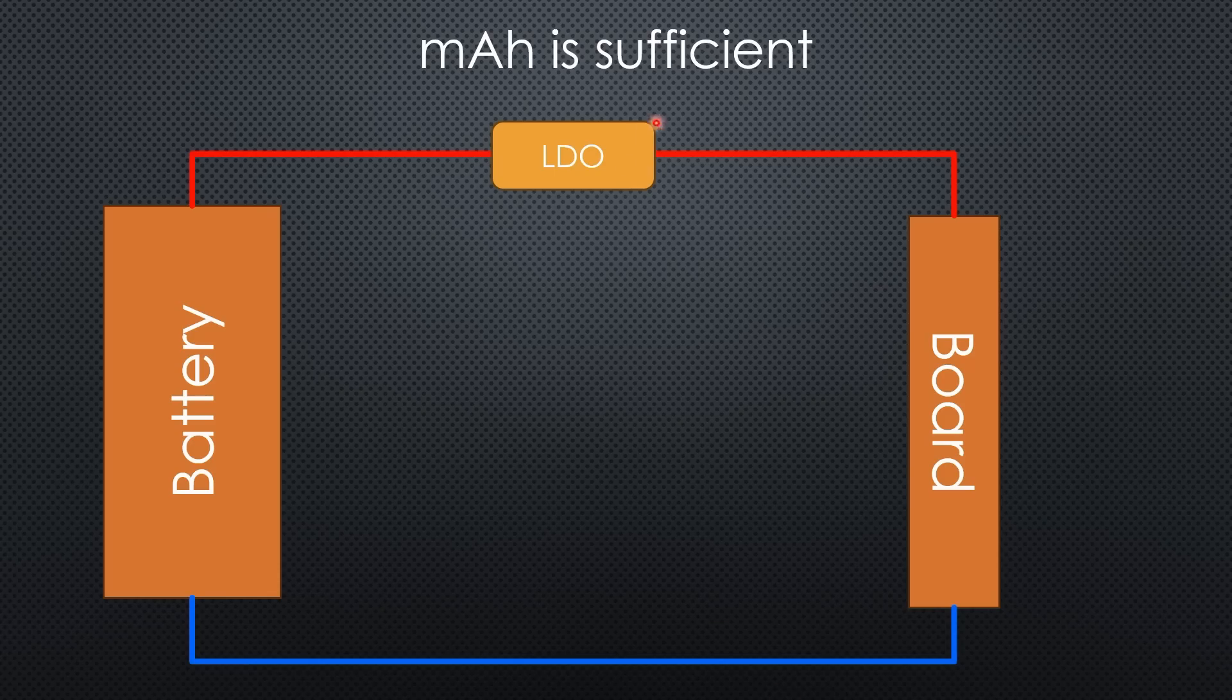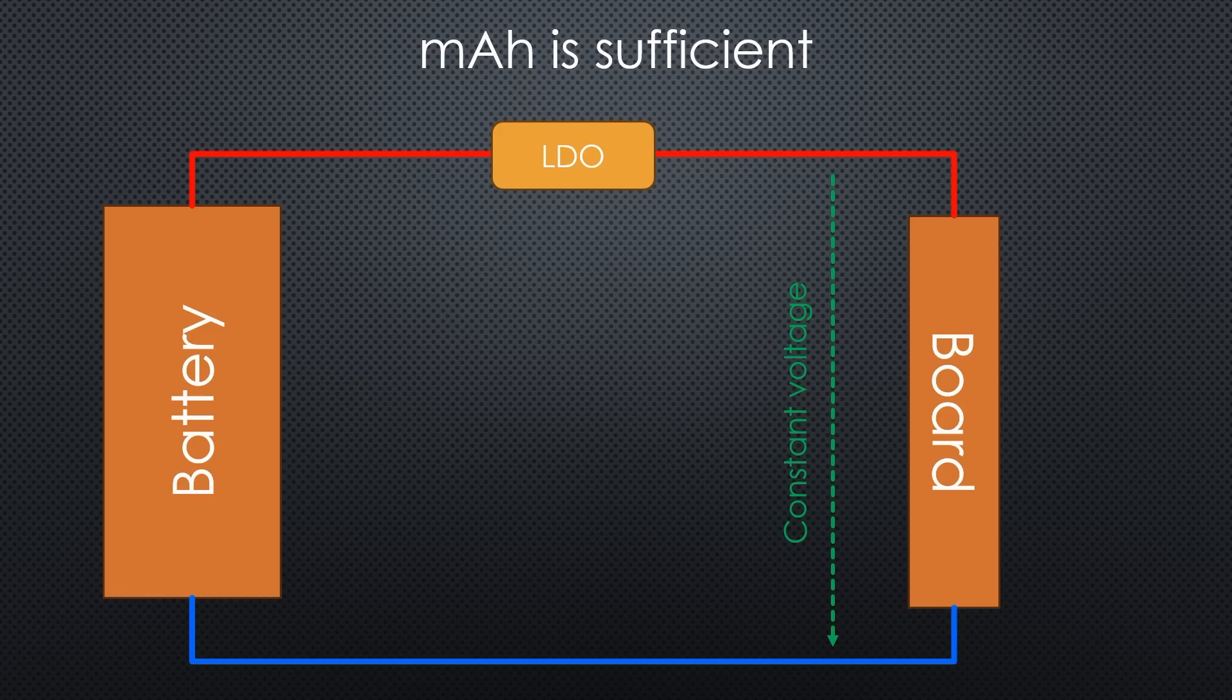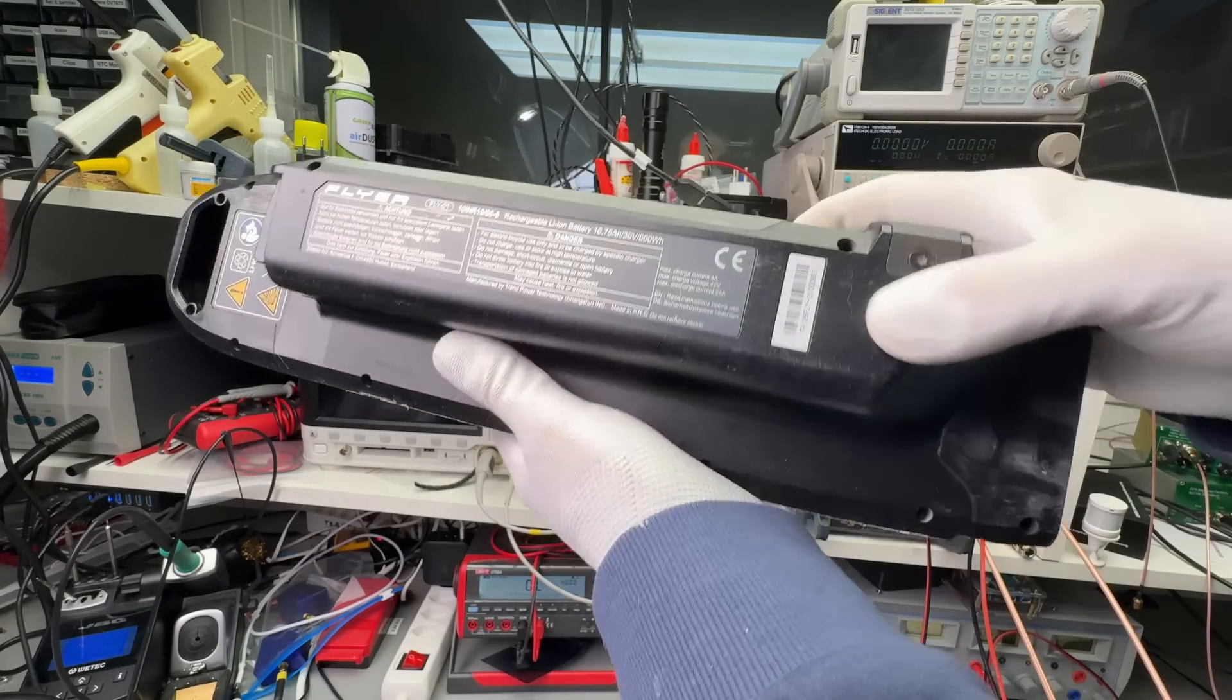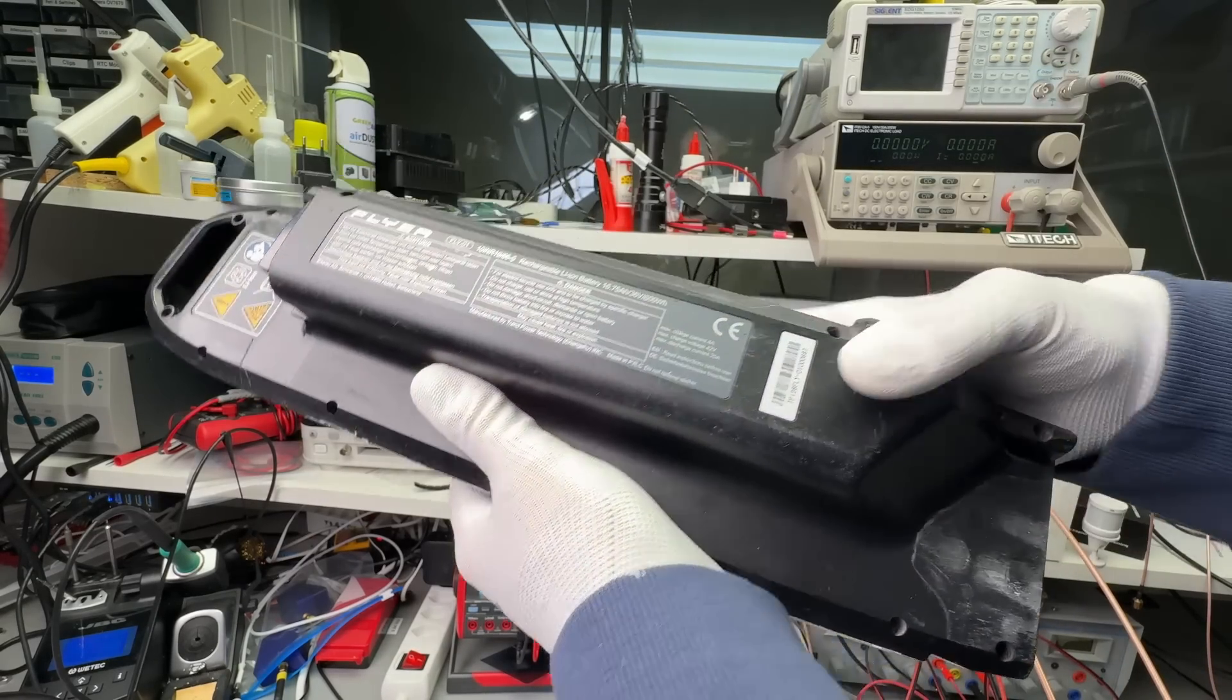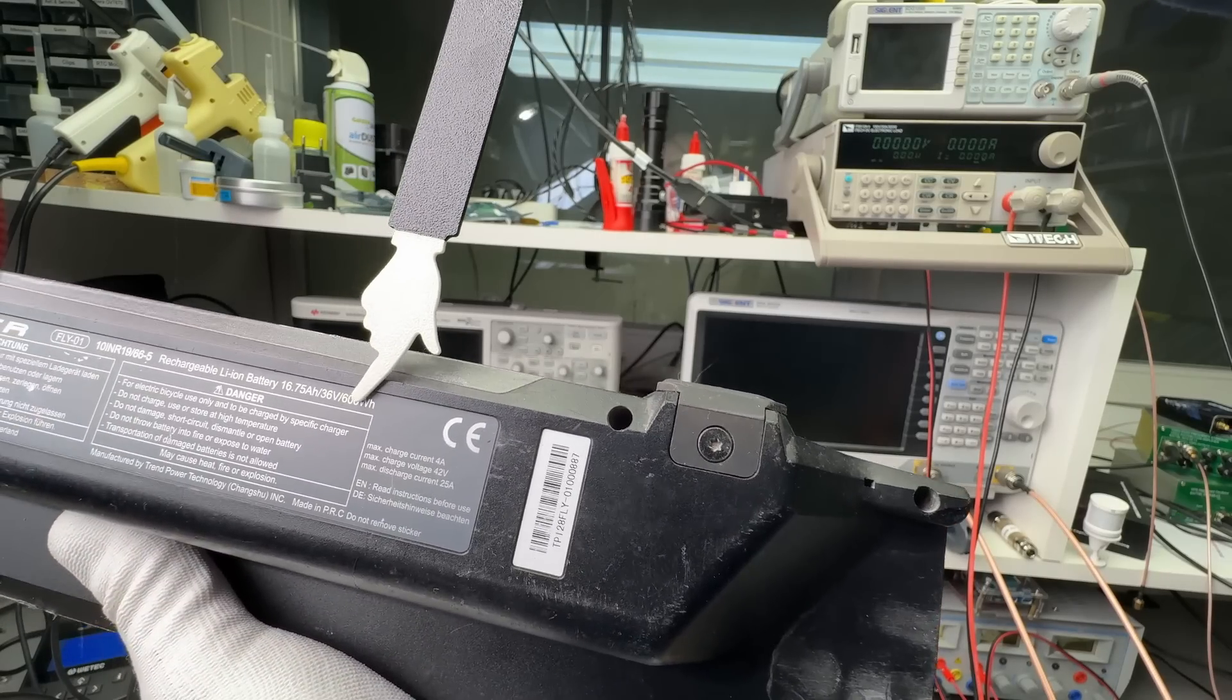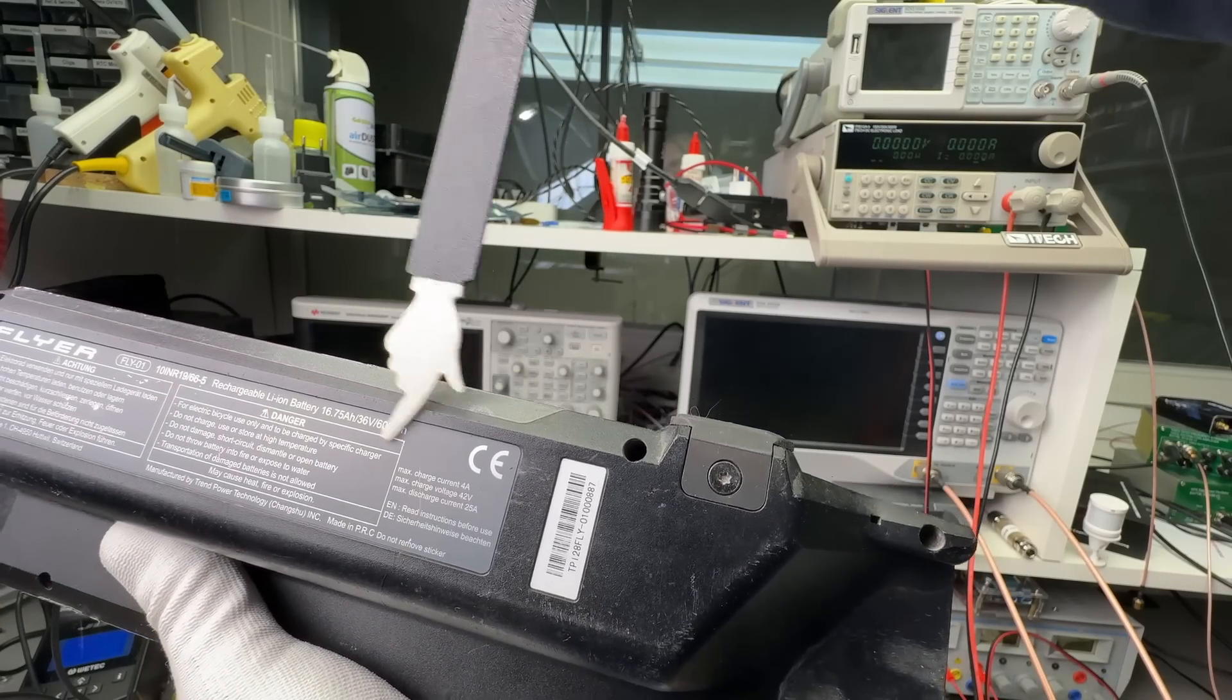When is measuring mAh sufficient and when is mWh needed? For designs with linear voltage regulators, mAh is sufficient to estimate the lifetime of a battery, because the current remains the same at your controller. For devices like bicycle batteries, mWh or Wh is more appropriate. Motors, for instance, consume less current for the same power when the battery is fully charged.